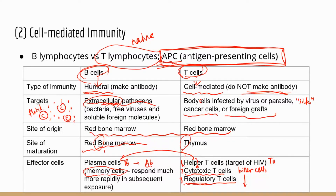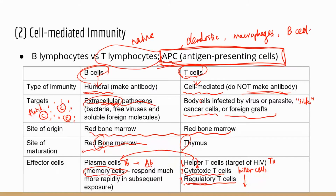There are quite a few types of cells that can be considered antigen presenting cells — for example, dendritic cells and macrophages. Remember, macrophages are just monocytes that enter the tissues; they are phagocytes with a large appetite. Macrophages and some B cells can also do the job of presenting antigens to T cells.